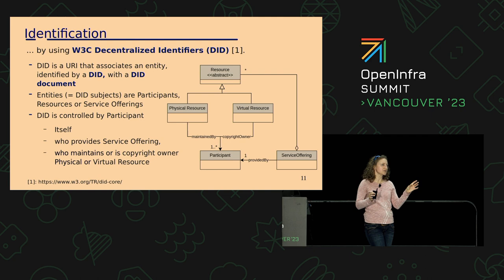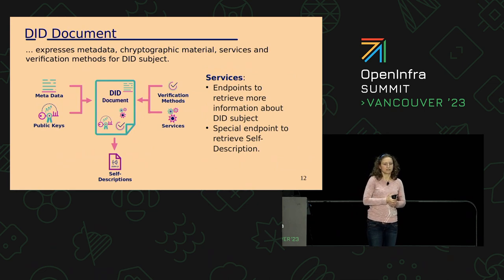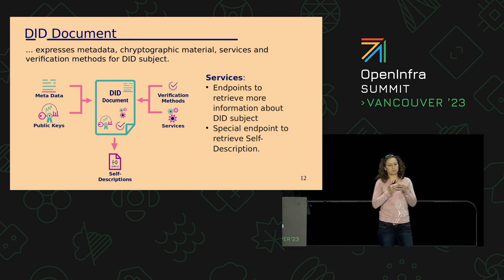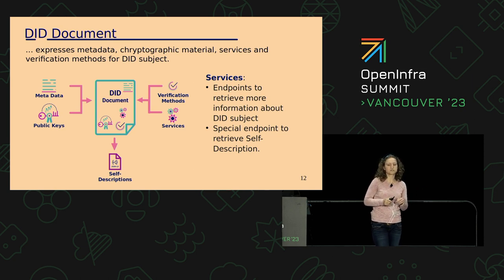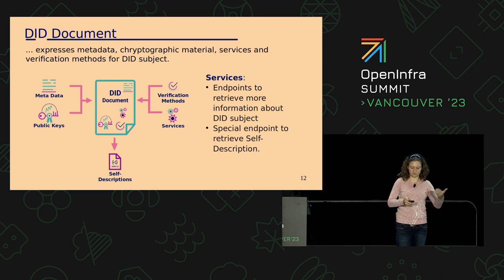GaiaX divides two different types of resources: a physical one — a resource you can touch, like a data center — or a virtual resource, which could be data, software, a license, or something like that. The DID document expresses metadata, cryptographic material, services, and verification methods for the DID subject. The DID subject is a participant, a service offering, or a resource. There is an important part in the DID document — the service part — which is an endpoint you can use to retrieve more information about this participant, the service offering, or the resource that the DID identifies. We use these services to retrieve a self-description.